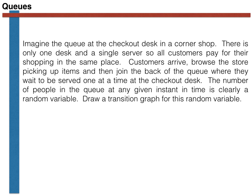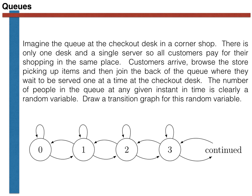My question to you at this stage is: can you draw a transition graph for the random variable that measures the number of people in the queue? Pause the video now and have a try. Hopefully, you drew something like this. The graph looks like this because we place no limit on the number of people that can enter the shop, so the random variable can take any value between zero and infinity — there are thus an infinite number of states in the chain.